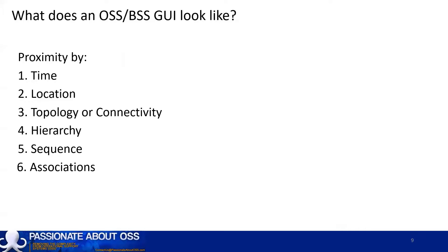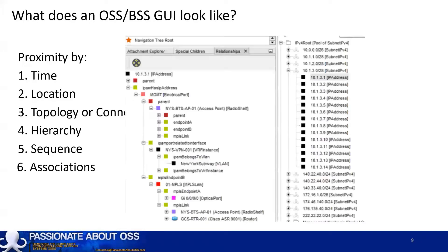We also have proximity by association, which can be presented in a number of different ways. Here on the right-hand side of the screen we have an IP address manager showing pools of IP addresses — subnets followed by a range of IP addresses below. On the left-hand side we can see how this IP address is associated to other concepts in the database: a physical port on an access point or a particular device, VRF instances, VLANs, and MPLS links showing the endpoints of the MPLS link. This is also a screenshot from the Kawaiba open source tool. We've now talked about some of the proximities and examples of GUIs, but I'm sure you've seen many others.